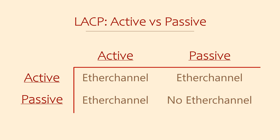LACP itself can be either in active or passive mode. An interface in active mode will actively start sending LACP messages when the interface comes online. An interface in passive mode will only send LACP messages if another device starts sending them first. So at least one of the two switches needs to be in active mode for an EtherChannel to form dynamically. Please note: a manual EtherChannel does not send or receive LACP messages at all.